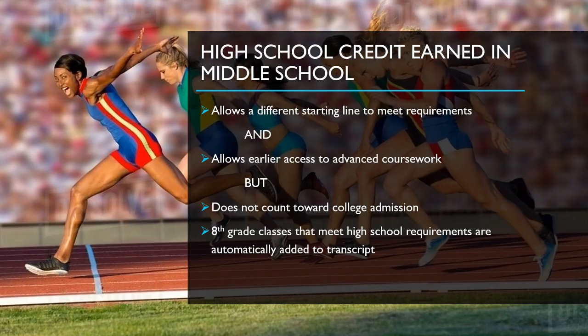For high school credits that you might have earned in middle school, this allows folks to start at a different point in the course sequences and get earlier access to advanced coursework. Some students come in starting at Algebra 1, some at Algebra 2; some will do Biology freshman year and some will do Physics B and Chem B. Everyone starts at their own place. You still need to earn 24 credits and meet all the same graduation requirements — it just impacts which courses you sign up for first.